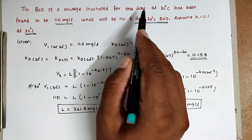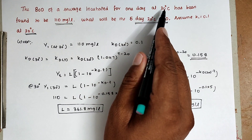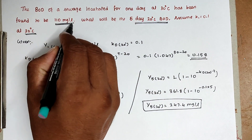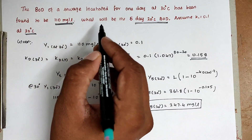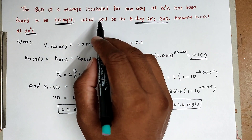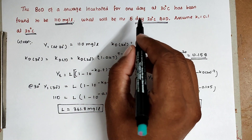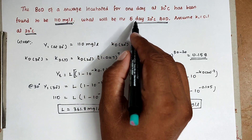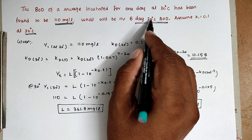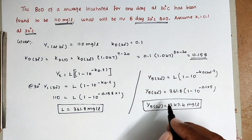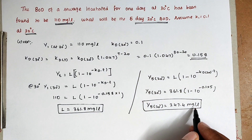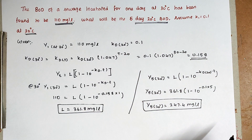To summarize: the sewage is incubated for 1 day at 30 degree Celsius and the BOD received is 110 milligram per liter. The same water is tested as 5-day BOD — incubated for 5 days at 20 degree Celsius — and the BOD is 247.4 milligram per liter. This is the method to solve the problem. We will see the next video. Thank you.